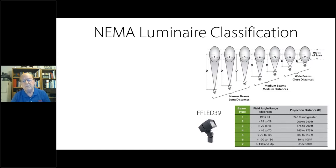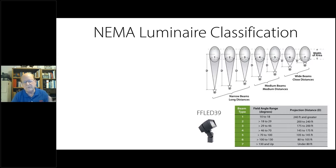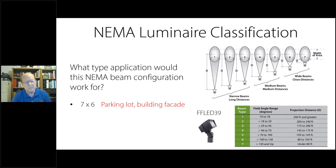You'll also notice if you look at the distance area, spotlights send the lighting further and floodlights are wider but don't send the light as far. You usually see two numbers — like a seven by six or a four by six. The first number is always the horizontal beam spread and the second number is always the vertical beam spread. We're going to use this knowledge today in our sessions to talk about our products.